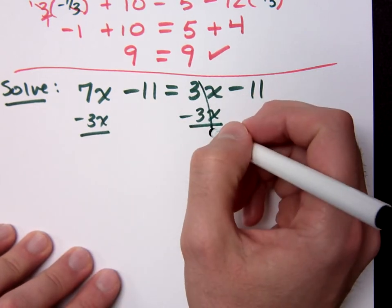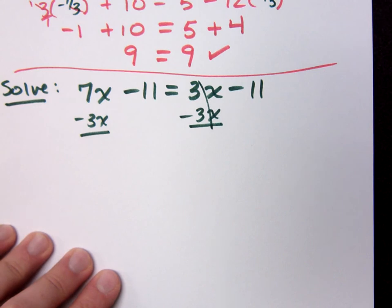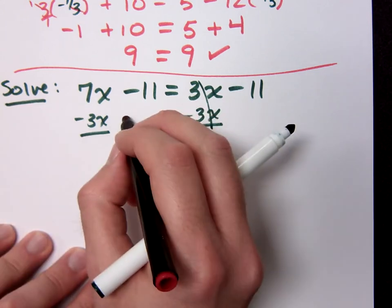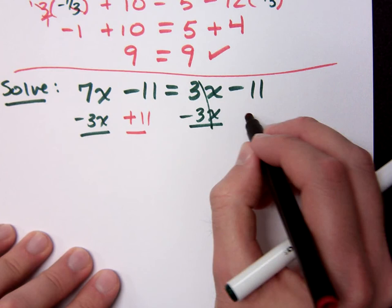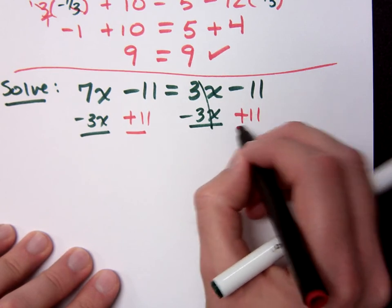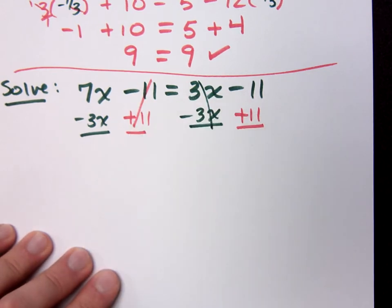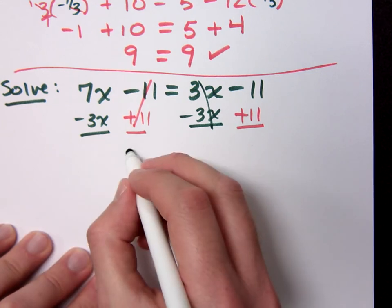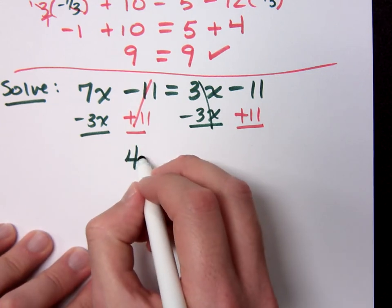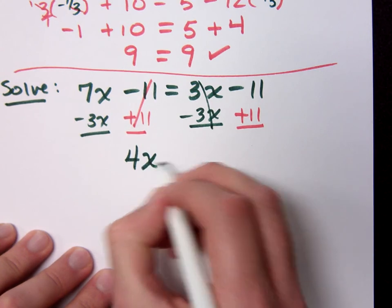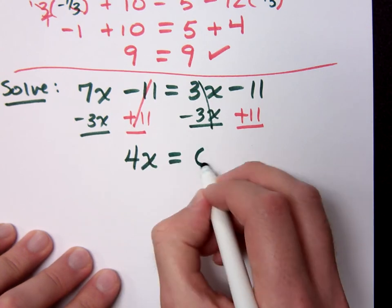But if I move my x's to one side, I've got to move my constants to the other side. So, add 11 on the left and on the right side. What do I have on the left side of the equation? Oh, 4x. 4x equals what? Zero.